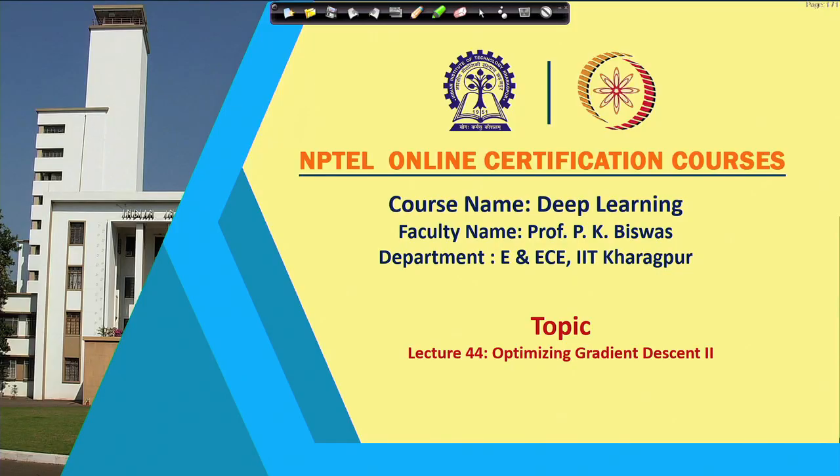Welcome back to the NPTEL online certification course on deep learning. For the last few lectures we have been discussing optimization procedures of gradient search techniques. Gradient descent is itself an optimization algorithm which tries to minimize the error function by updating the weight vectors in a deep neural network. But gradient descent faces challenges like the vanishing gradient problem and slow learning rate, so different optimization techniques have been suggested to make the learning algorithm faster and more efficient.